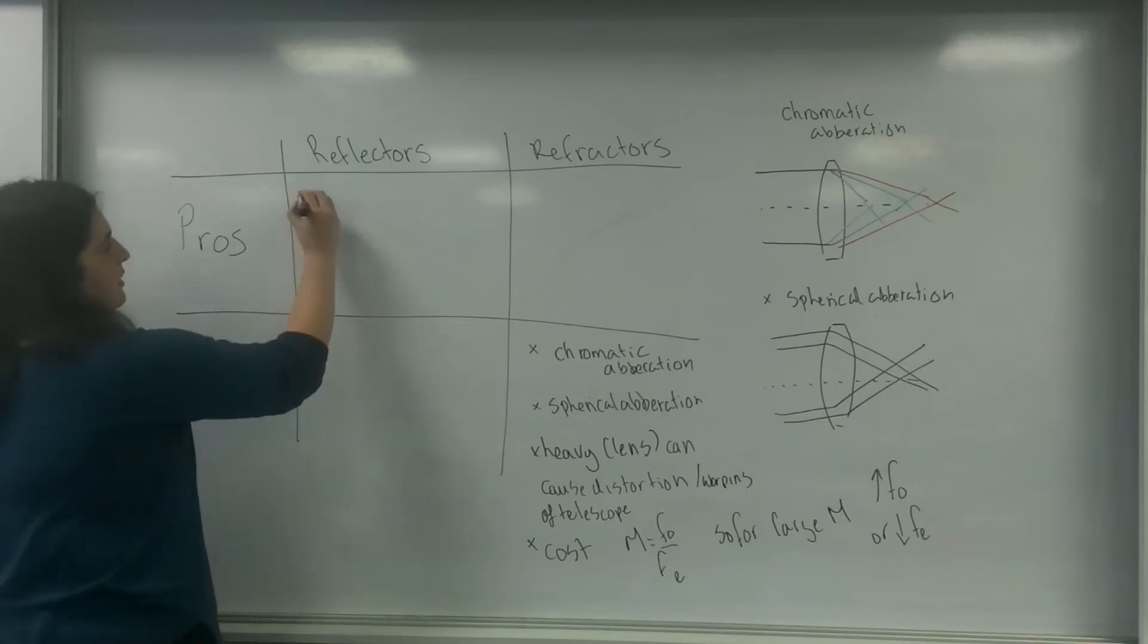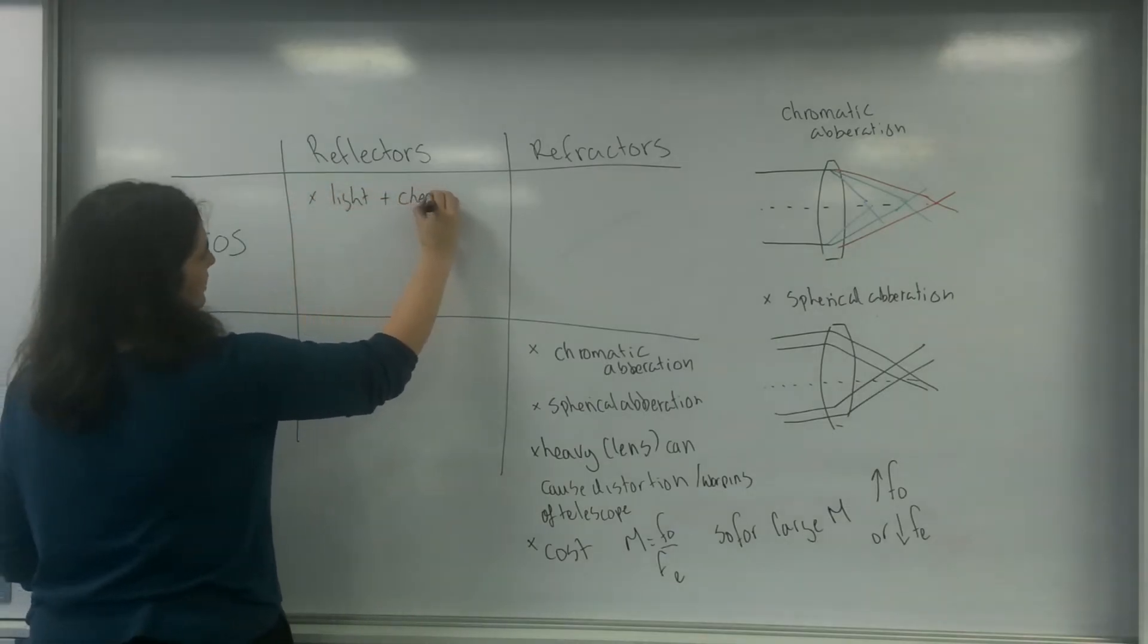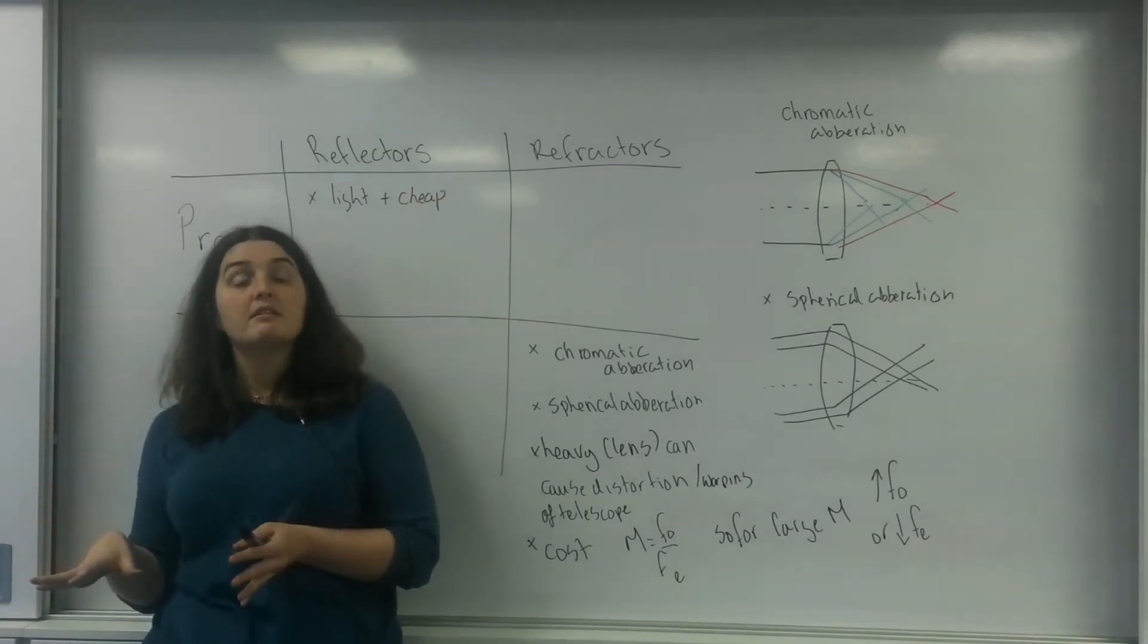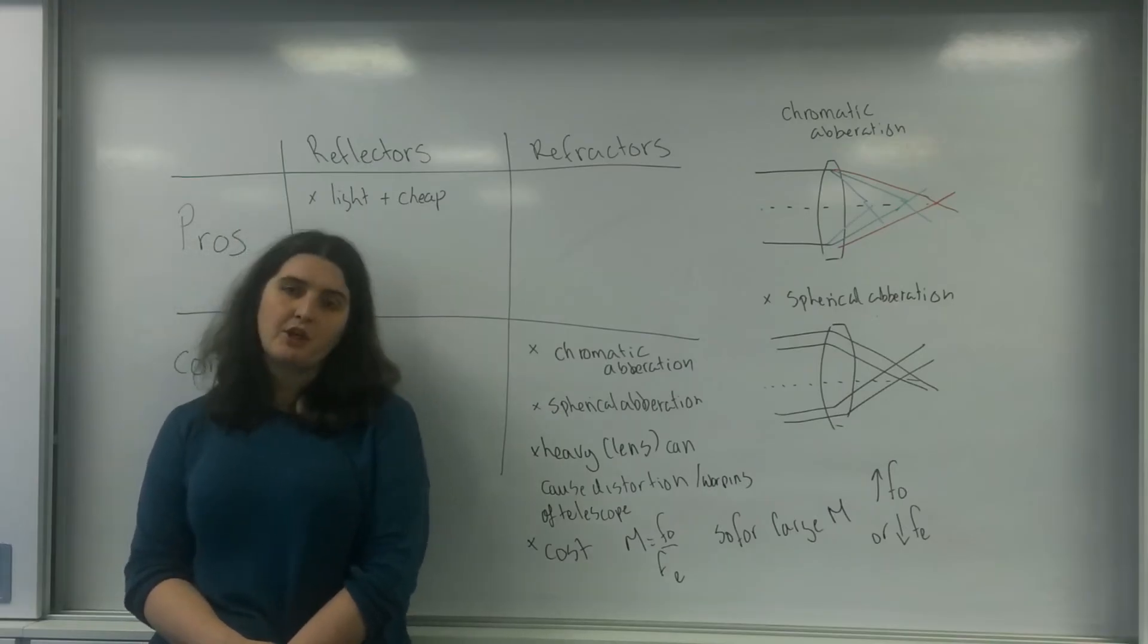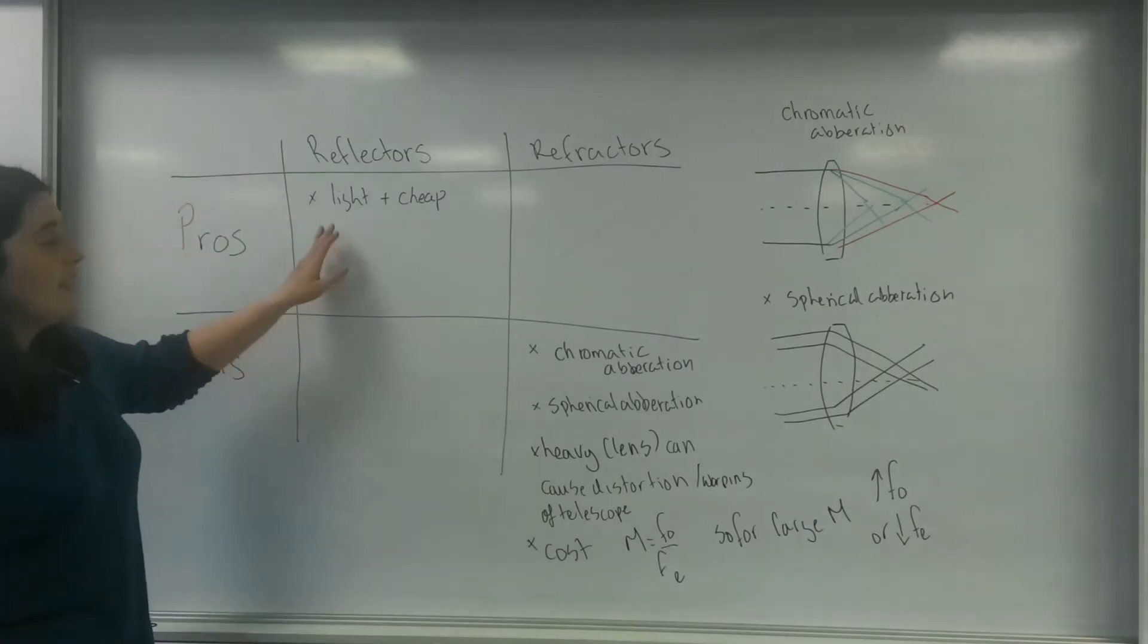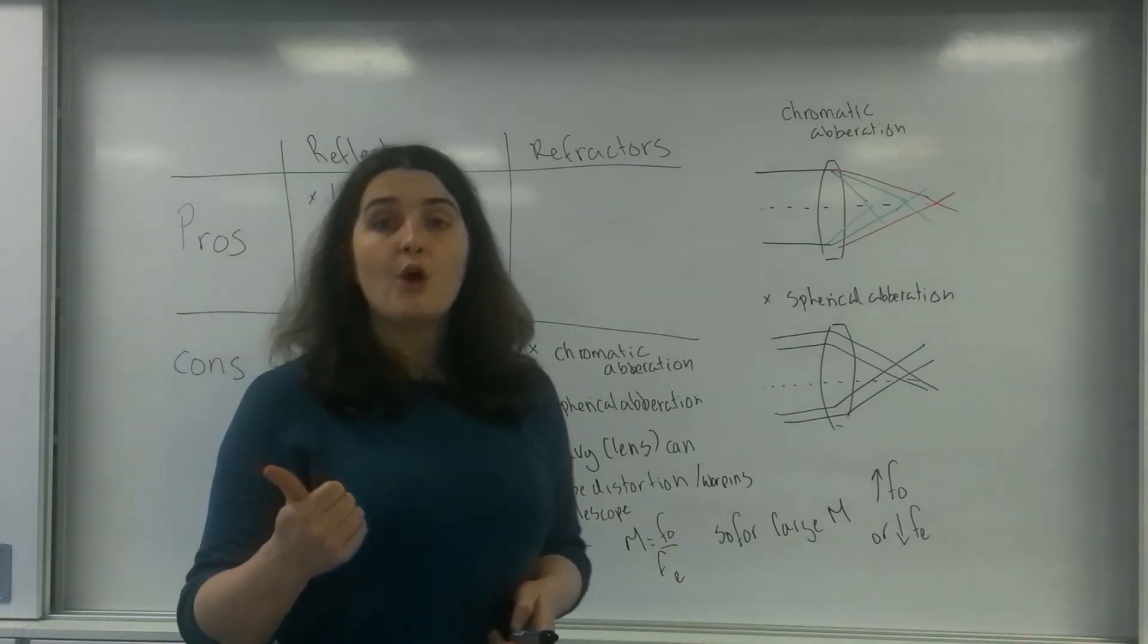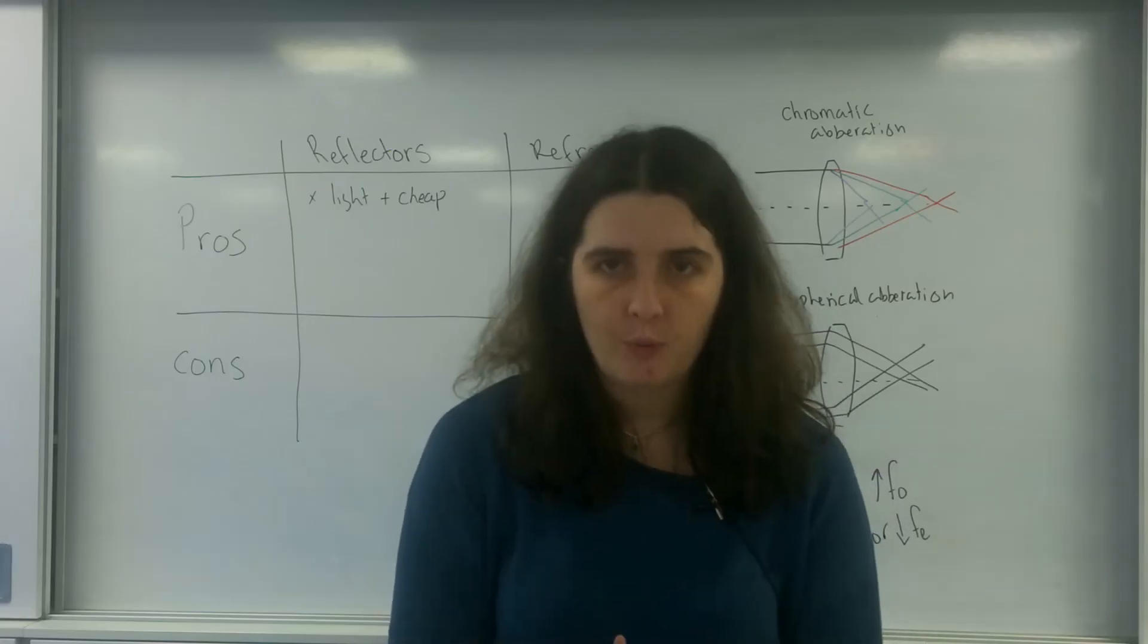Now reflectors on the other hand are light and cheap, especially today. All you need is a shiny surface to reflect off of. Now the best reflectors are things like the James Webb Telescope and they can cost a lot of money because they want the best reflection, the smoothest surface. But the light thing is useful. This means if I want to move it around or if I want to angle it all over the place, it's much easier to do.